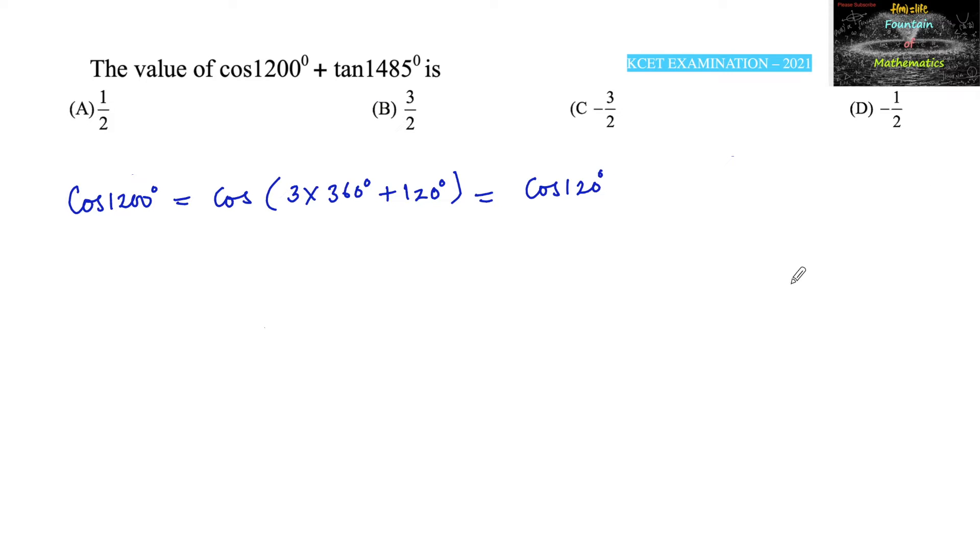Since we know that cos 2n pi plus theta is equal to cos theta, and cos 120 we can write it as cos 90 degrees plus theta, that is 30 degrees.